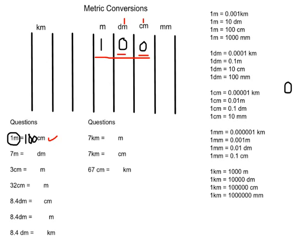Another example: 7 meters — how many decimeters is it? We put the 7 in the meters column. Decimeters is the next column to the right, so we put a zero there. Our answer is simply 70 decimeters. We're just adding a zero to move one column to the right.